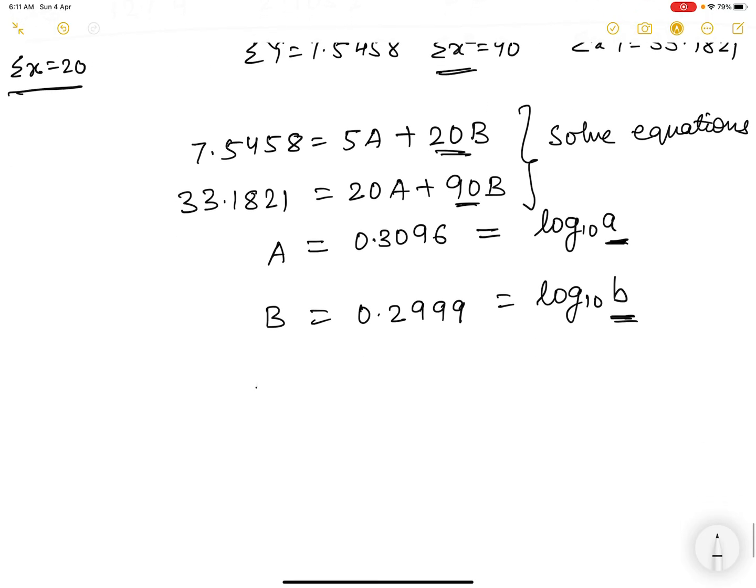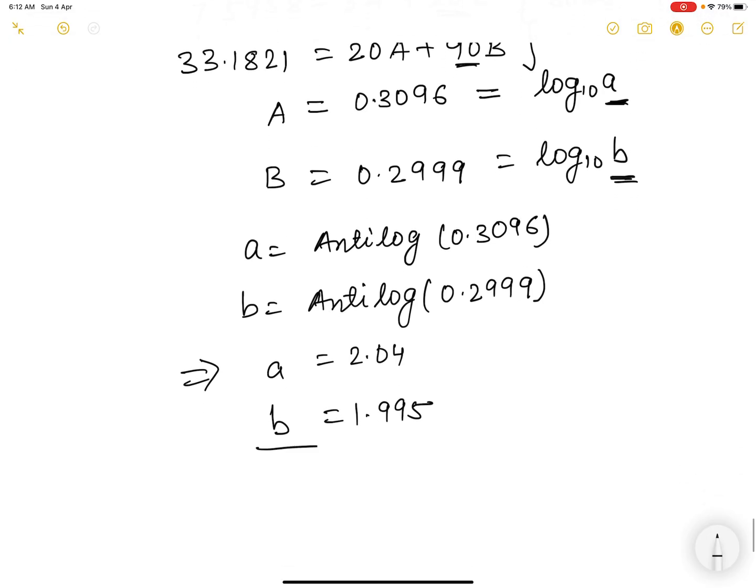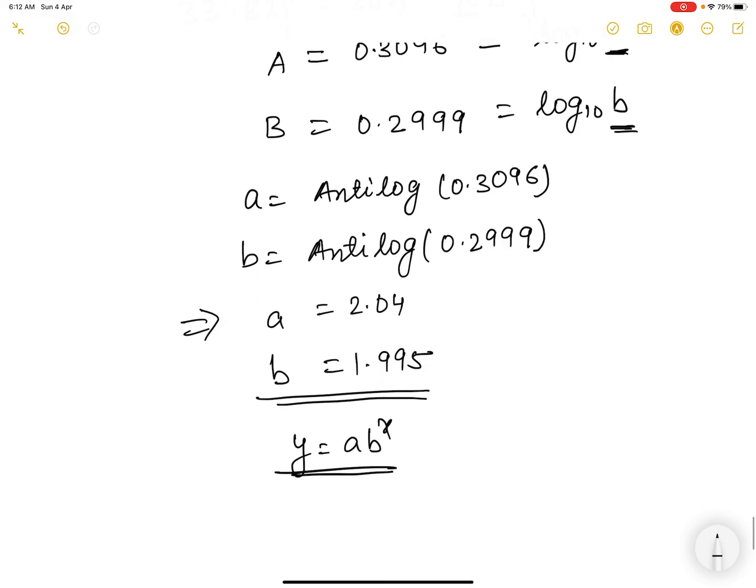So small a is antilog of 0.3096 and b is antilog of 0.2999. Use your calculator to find the antilog value. And once you will use it, you will find the value of a and b as 2.04 and 1.995. Let us substitute this value to the curve which we want to fit. We are putting the values in this curve, and the value is 2.04 times 1.995 to the power x.